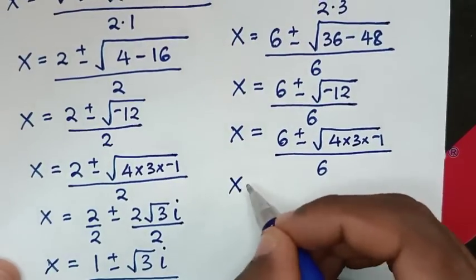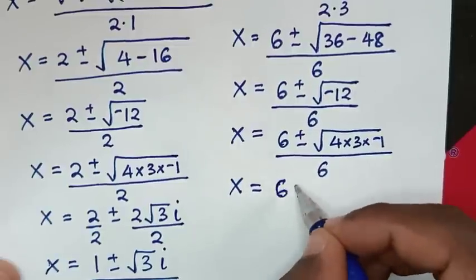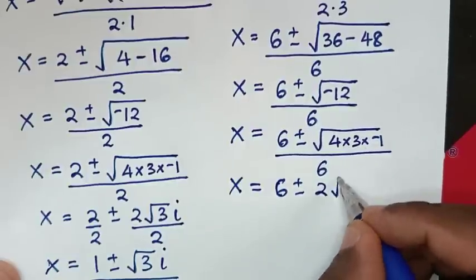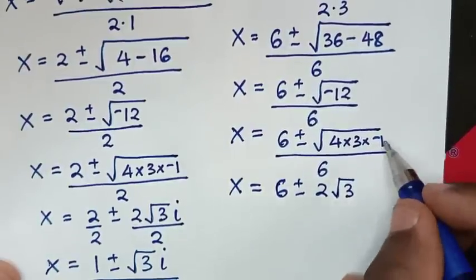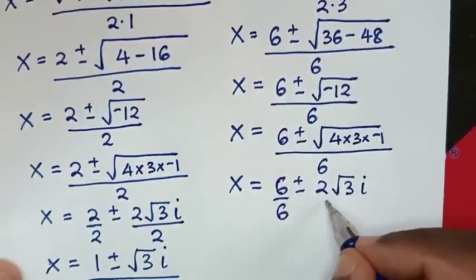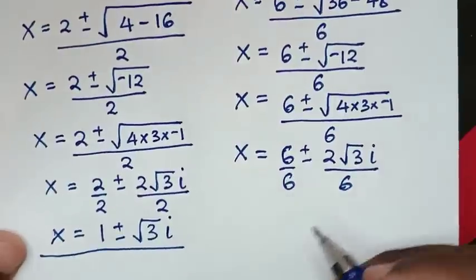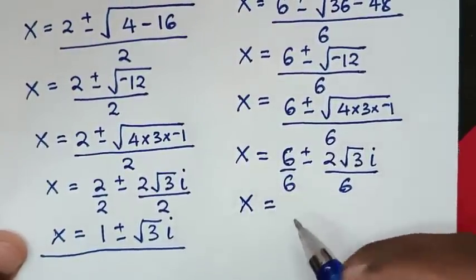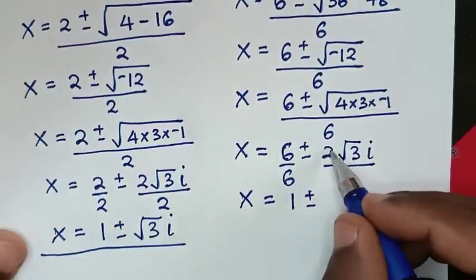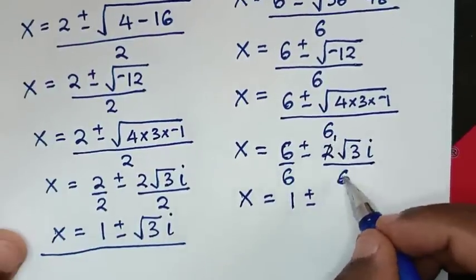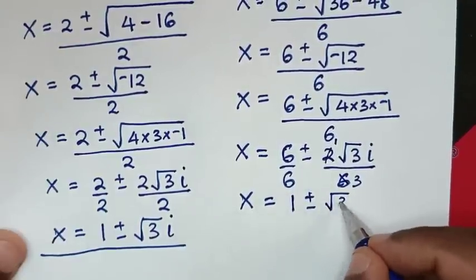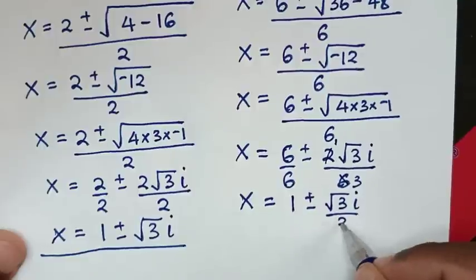Then x equals 6 plus or minus square root of negative 12, which is 4 times 3 times negative 1, over 6. The square root of 4 is 2, times square root of 3, times i. Dividing by 6: 6 over 6 is 1, and 2 over 6 simplifies to 1 over 3. So x equals 1 plus or minus square root of 3i over 3.